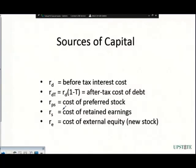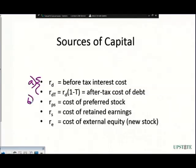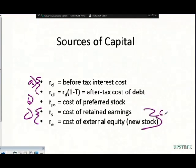Basically, we have three different categories. Category A includes the cost of debt — specifically the after-tax cost of debt, because we do get a tax write-off. Category B is preferred stock, which is that hybrid security in between a bond and a stock. And then Category C is the cost of retained earnings and the cost of external equity, which basically comes down to common stock.